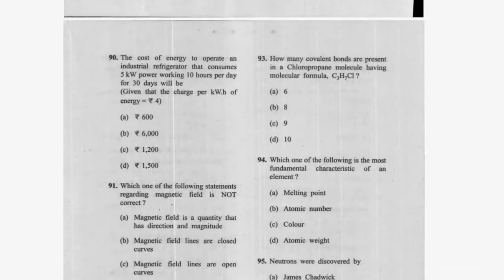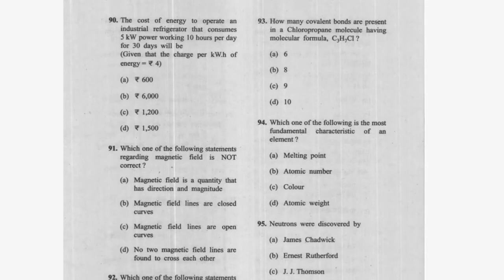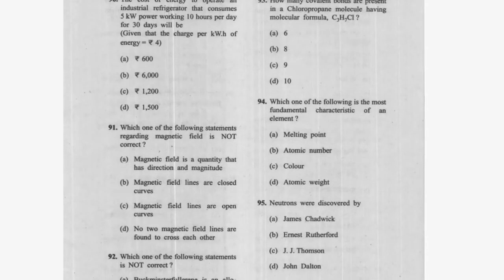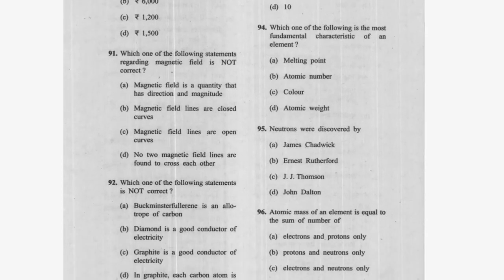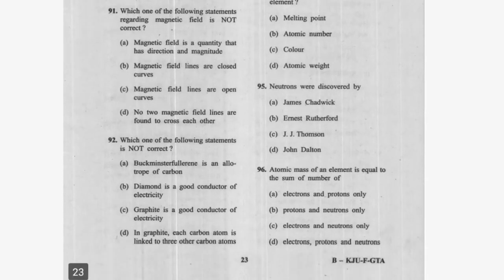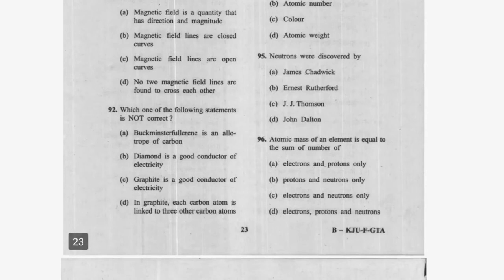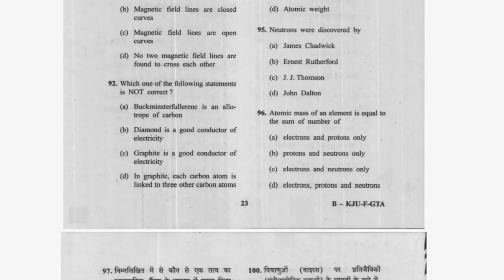Question 88: Which statement regarding magnetic field is not correct? Magnetic field lines are open — option C is correct as the incorrect statement. Question 89: Which statement is not correct? Diamond is a good conductor of electricity — that is false; diamond is not a good conductor — option B is correct.